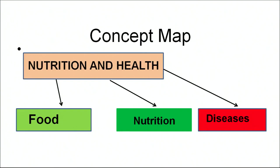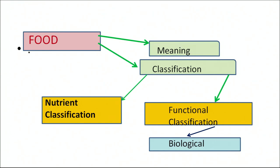Before moving on to the actual contents of the topic, let us see the major concepts which we have to cover. There are three major concepts into which this chapter has been divided. The first concept is food, nutrition and disease. In the subtopic of food, we have to cover the meaning of food, its classification on the basis of nutrients present in it, and the functional classification — that is, the biological functions which food performs in our body.